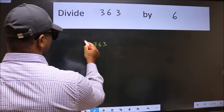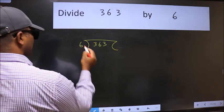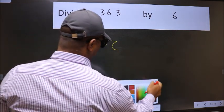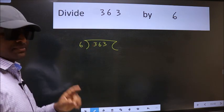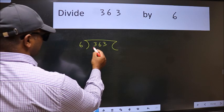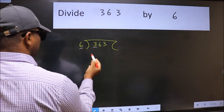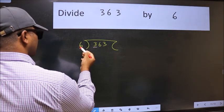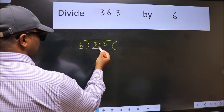363 here, 6 here. This is your step 1. Next, here we have 3 and here 6. 3 is smaller than 6, so take two numbers, 36.